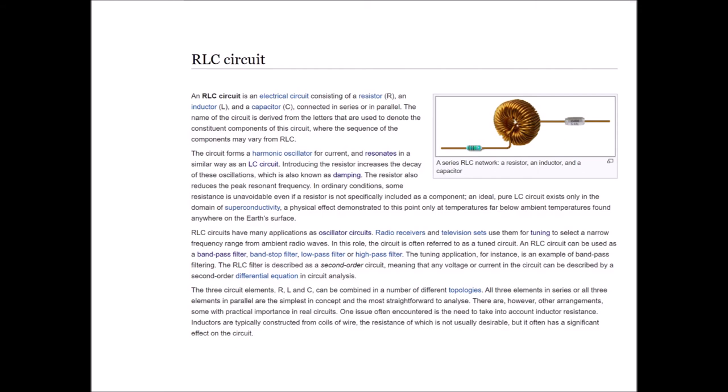Introducing the resistor increases the decay of these oscillations, which is also known as damping. The resistor also reduces the peak resonant frequency. In ordinary conditions, some resistance is unavoidable even if a resistor is not specifically included as a component. An ideal pure LC circuit exists only in the domain of superconductivity, a physical effect demonstrated to this point only at temperatures far below ambient temperatures found anywhere on the Earth's surface.